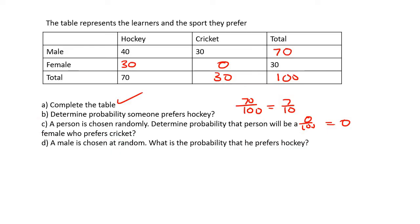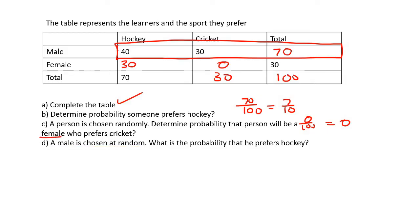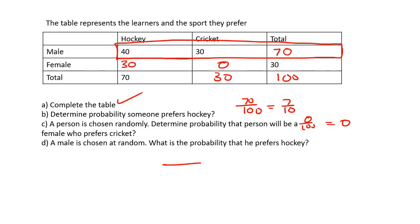The next question is very important. It says a male is chosen, so we're only looking at the males. The previous question said determine the probability that a person will be a female who prefers cricket — that was out of everyone. But here, a male is chosen, so we're only looking at the 70 males. What is the probability that he prefers hockey? There are only 70 people we're looking at. Out of those 70, 40 prefer hockey. So the probability is 40 out of 70, which simplifies to 4 out of 7.